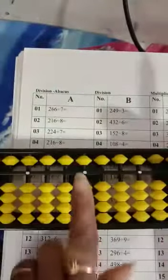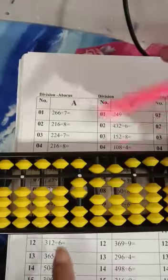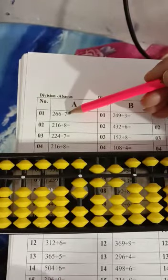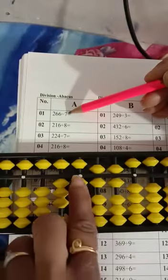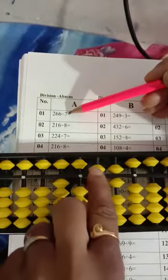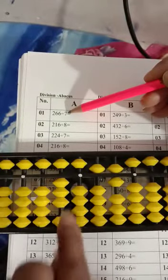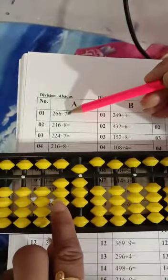First, put your value 266. 266 divide by 7. That means 7, 7, 3, 7, 3, 21 minus 20 minus 1. We have 56. Then 7, 8 is a minus 50 minus 6. Answer is 38.